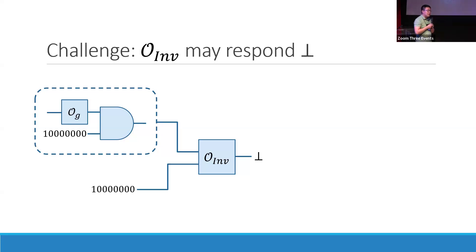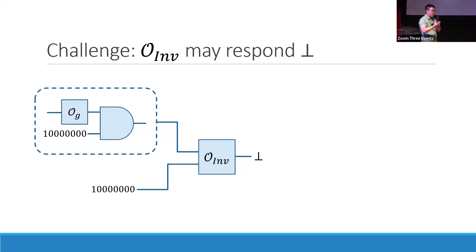Consider the original circuit we looked at where we can find labels starting with 1. Now imagine instead of outputting a specific input x, it outputs bot. That means it tells you that no label starts with 1 — in other words, all valid labels for group elements start with 0. This seems like a lot of information given within a single query, so we want to say that either this doesn't happen very often or it gives you very little information.